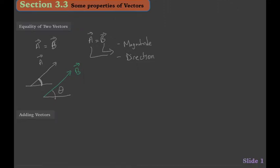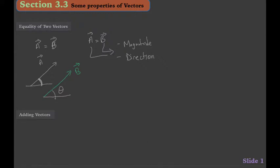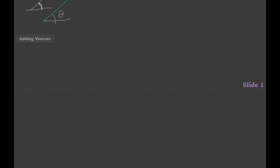Now let's talk about adding vectors. The rule for adding vectors can be described better using a graphical method. Let me draw out a coordinate system and some vectors — vector A, B, C, and D.